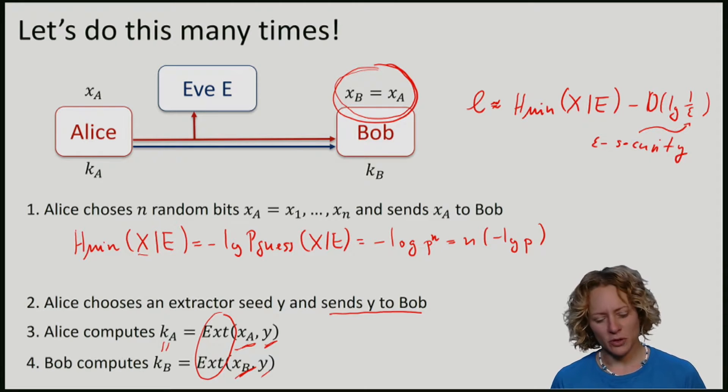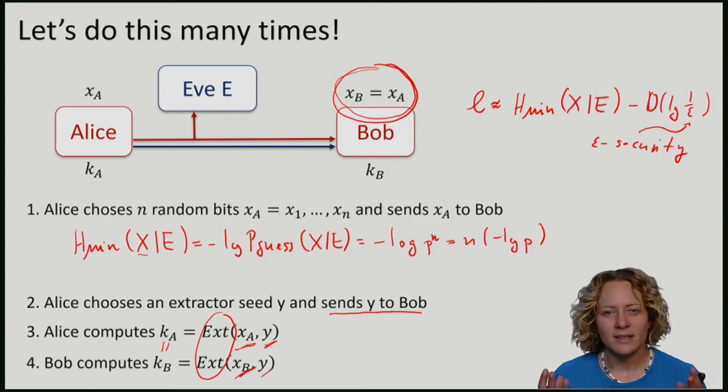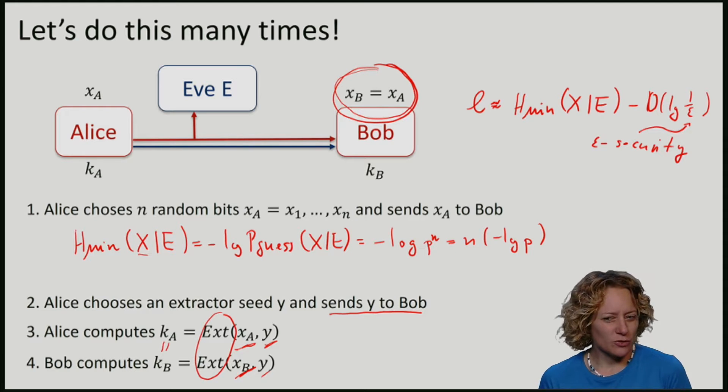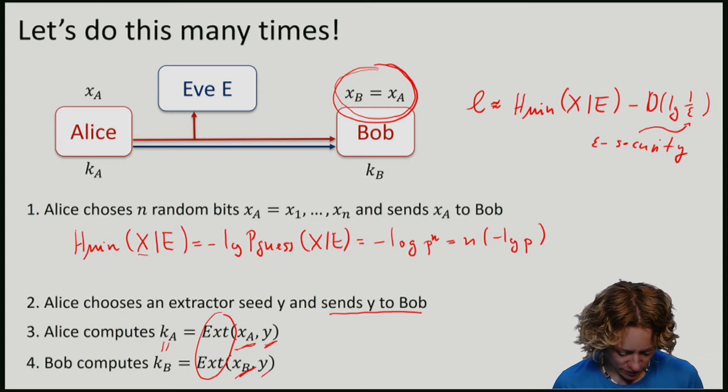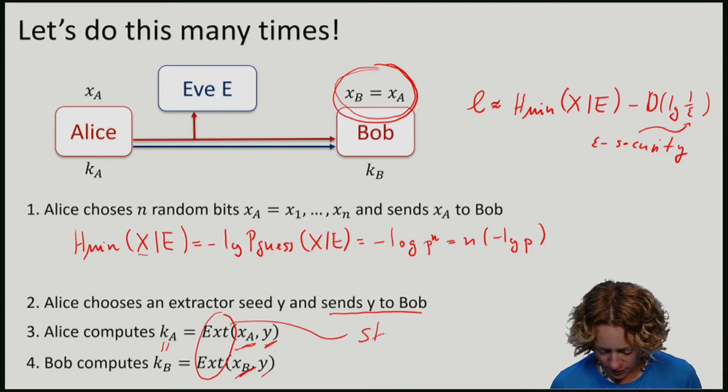You might be wondering, why does Eve not gain any information because she also learns the seed y of the extractor? Why is the key still secure? Remember from our week on randomness extractors that there is such a thing as a strong randomness extractor. So my function ext here will be a strong randomness extractor.